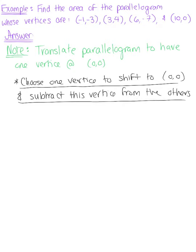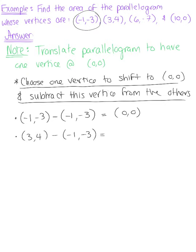We'll just start with our first point here. So we're taking the first vertex (-1, -3) and we're subtracting it from itself to give us a vertex at the origin. We're going to do the same thing now with the remaining vertices. So we have the vertex (3, 4) minus (-1, -3), which leaves us with (4, 7).